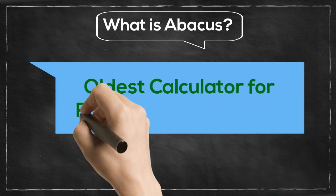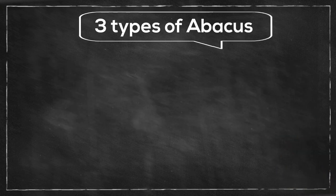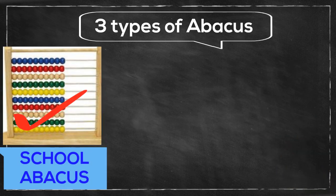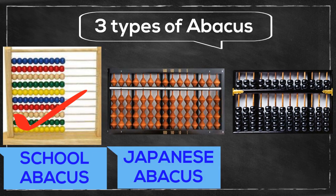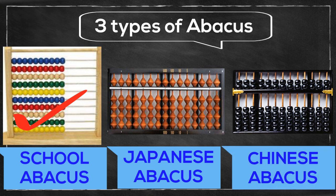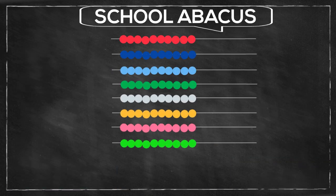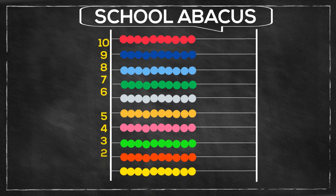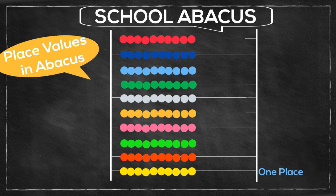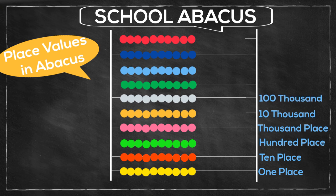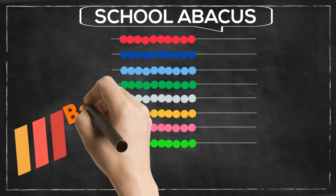There are three types of abacus used commonly. We will start with the school abacus, as it's more appropriate for beginners than the Chinese abacus or Japanese soroban. This school abacus has 10 rods with 10 beads in each rod, so 100 beads in total. Each row represents a place value: one, ten, hundred, thousand, ten thousand, hundred thousand, millions, ten million, hundred million, and billion.